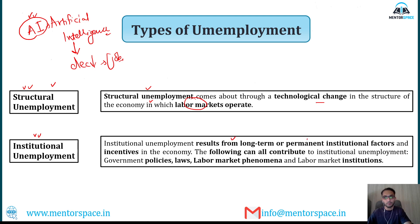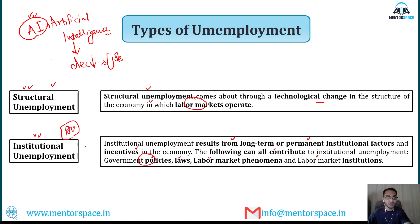Institutional unemployment results from long-term or permanent institutional factors and incentives in the economy. Factors such as government policies, laws, labor market phenomena, and labor market institutions can all contribute to institutional unemployment. For example, if the government changes policies or laws for jobs in any sector such as PSUs, and people become unemployed due to those changes, that is institutional unemployment.